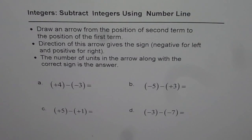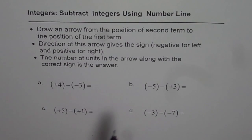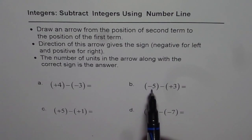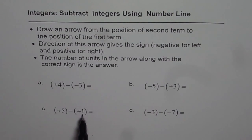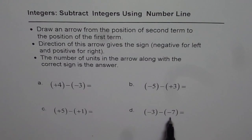Integers: subtract integers using a number line. I am Anil Kumar and I will teach you how to subtract integers using a number line. We have four examples here to help us understand the process. The first one is plus four take away minus three. The second, take away plus three from minus five. C is take away plus one from plus five, and D is take away minus seven from minus three.